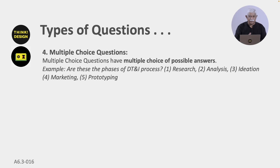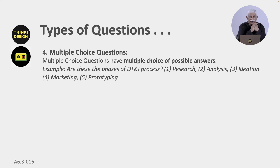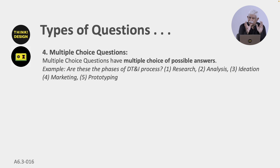The fourth type is multiple choice questions — they have many answers to a question. For example: 'Are these the phases of the design thinking and innovation process? Research, analysis, ideation, marketing, and prototyping.' One of them is not really part of the process, so you select the correct ones to give the correct answers.